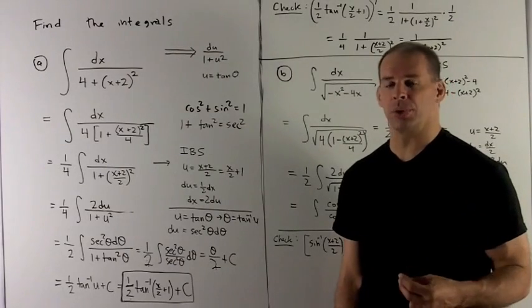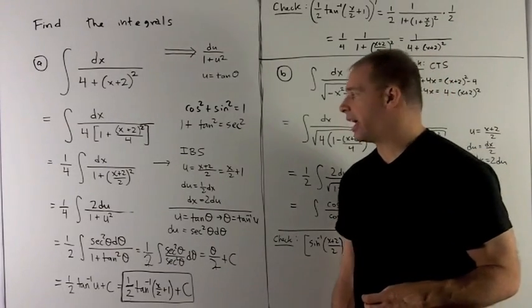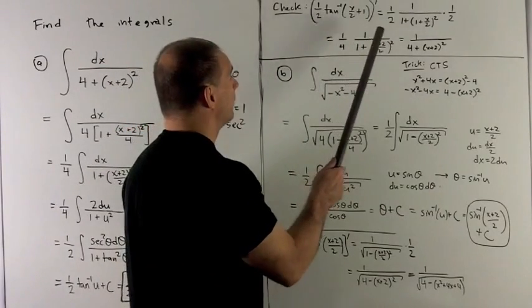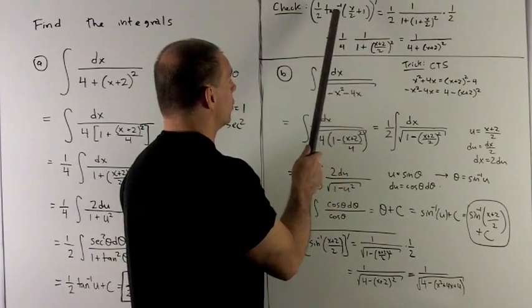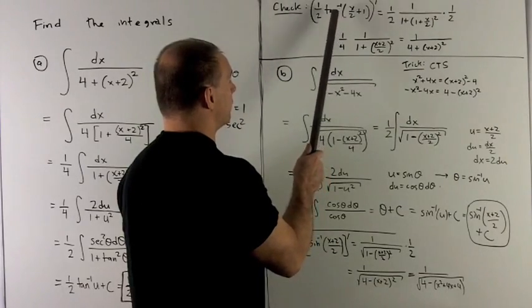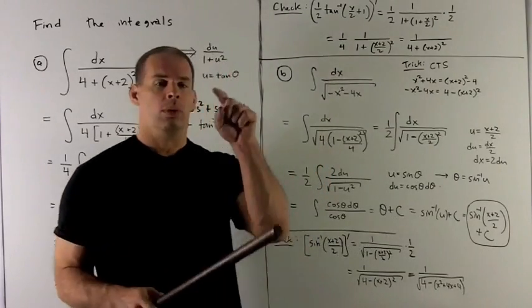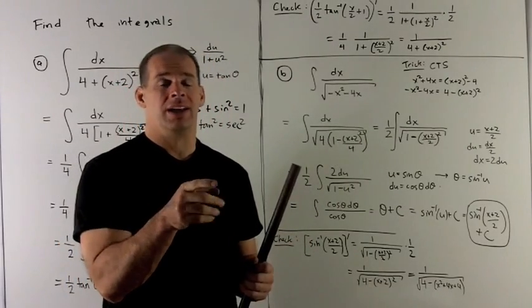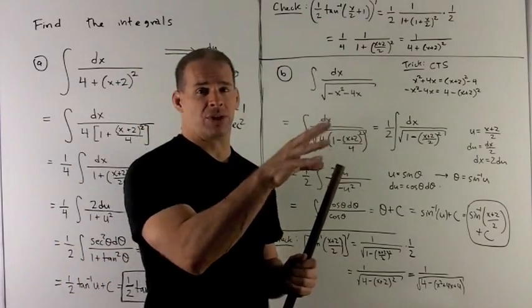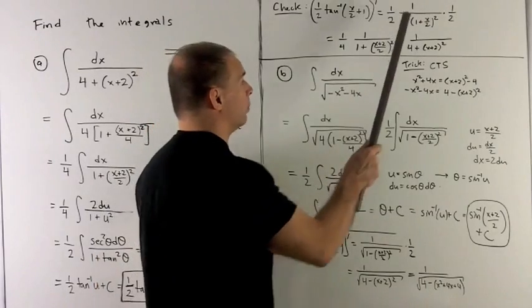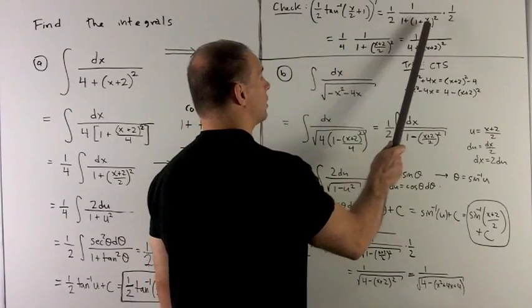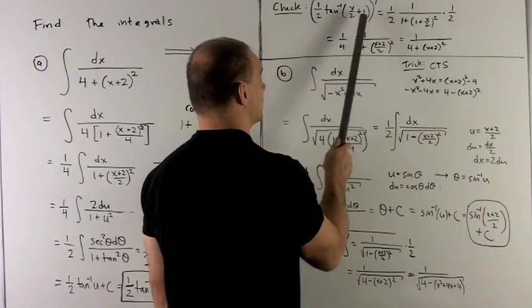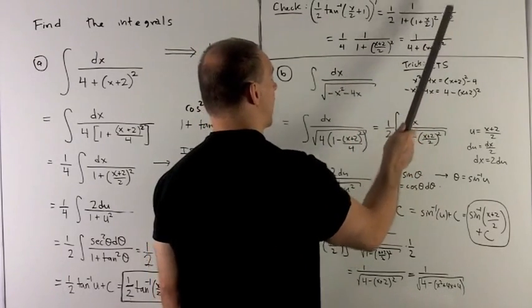Let's check this just to run us through the derivative of inverse tangent again. So let's take a look. Take the derivative of this. The half comes out. So the rule for the derivative of inverse tangent is if I have box here, it's going to be 1 over 1 plus box squared times the derivative of whatever is in the box. So that's going to be 1 over 1 plus box squared times the derivative of whatever is in the box. What's in the box is x over 2 plus 1. So its derivative is 1 half.